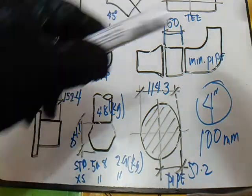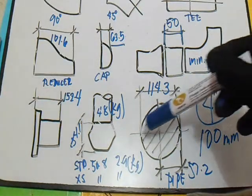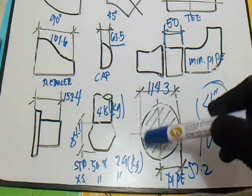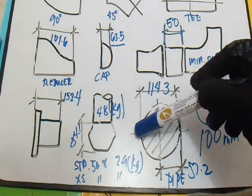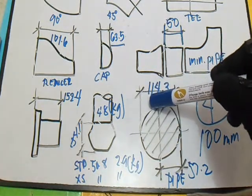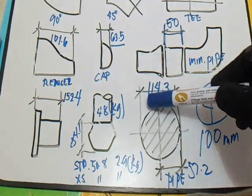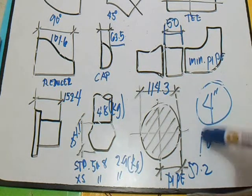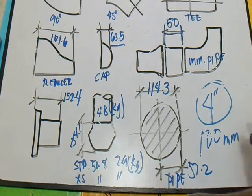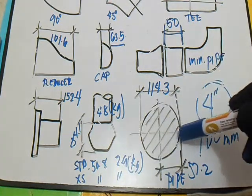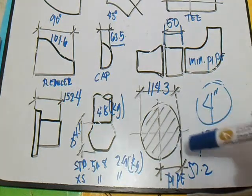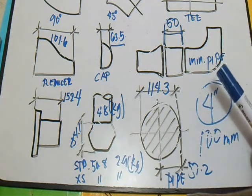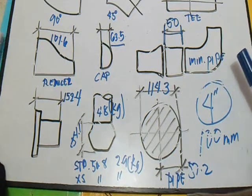Next is pipe. For the 4 inch pipe, our diameter is 114.3. This is for the 4 inch pipe, 100mm. For the radius, we have 57.2.